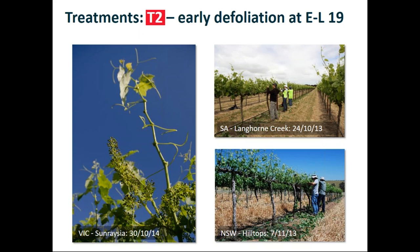The intention of this treatment was based on quite a bit of work done using this technique in Italy in particular. The idea is that by removing all of those leaves we reduce the carbohydrate available to the inflorescences during fruit set and thereby reduce the yield, but due to additional growth and lateral growth we end up with very little change in canopy area. So by doing that we reduce the amount of yield per unit canopy - at least that's what has been shown in Italy.